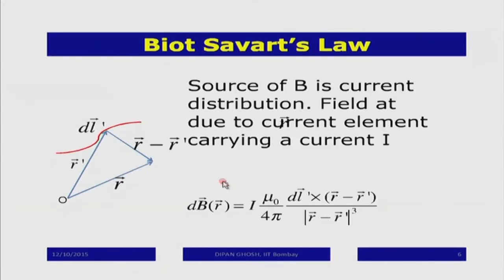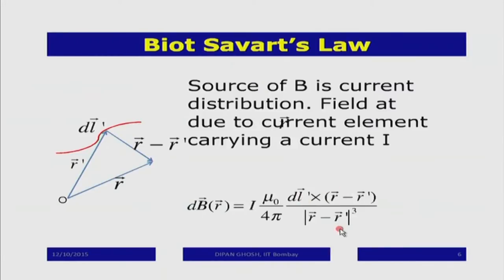This is the Biot-Savart law, found to be true by experiment — like Coulomb's law. The constant is mu_0/4pi (mu_0 is called the permeability of free space, as epsilon_0 was the permittivity). The law is proportional to the current, and it is an inverse square law proportional to 1/|r − r'|^2. Because the force is sidewise, the magnetic field direction is given by dL'×(r − r'). This is the all-important Biot-Savart law taking the place of Coulomb's law.